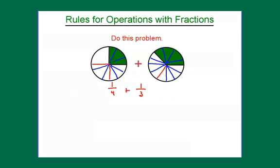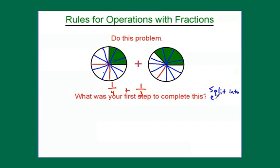So the first step I took to complete this was to split these up into equal sectors. So split both of these into equal sectors. Now I'm able to get a little bit clearer picture of what I'm adding. With 1 fourth, I've got, let's rewrite this up here.